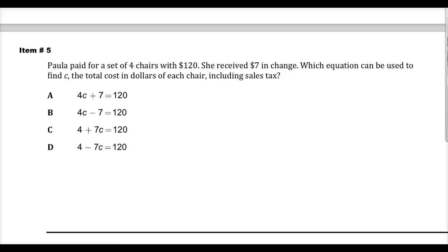Welcome. This is item number five from the newly released spring 2014 test items for 7th grade TCAP math. The question says Paula paid for four sets of chairs with $120. She received $7 and change. Which equation can be used to find C, the total cost in dollars, including sales tax?